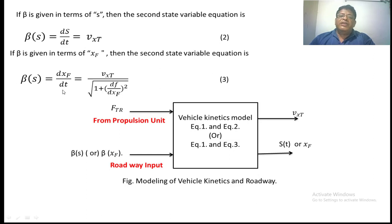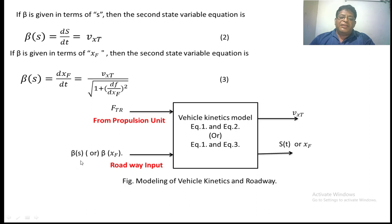dXf/dt equals Vxp divided by k times root of 1 plus (df/dXf) squared. Any one of these equations can be taken as a state variable to describe the kinetic model of the vehicle. The input to this model is Ftr, the tractive force from the propulsion unit. One more input is the gradient, which may be a function of Xf or x. The outputs are S(t) or Xf, and Vx(t), the velocity of the vehicle.